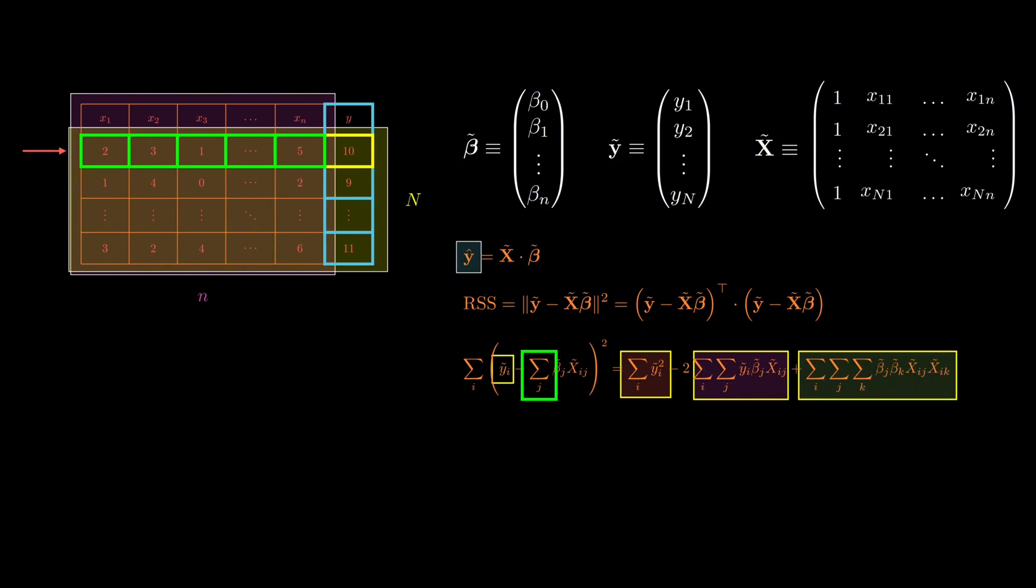To find the best fitting parameters, we take the derivative of the RSS with respect to each component of the beta-tilde vector, and set those derivatives to zero. This gives us an equation, a sum over Y times X minus a double sum over beta times X times X, all equal to zero. We then convert this back into matrix form, giving us what's called the normal equation.